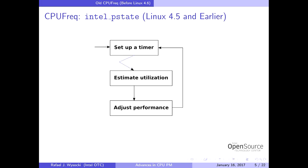What happened in the past — in Linux 4.5 and earlier — was that the CPU frequency control subsystem was not aligned with everything else, so the user experience suffered. To explain why we made those changes, I need to talk about how things worked before, to give you the idea of why it was necessary to change them.